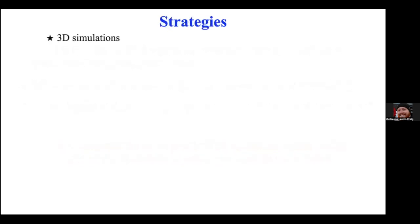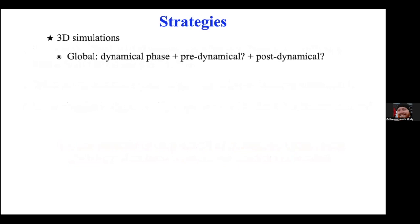Our strategy involves 3D global simulations of the dynamical phase. Ideally you would also simulate what happens before and leads into common envelope, but that's computationally very demanding because the orbital period is much larger at the beginning. So we cheat a little and start the companion right next to the primary star rather than at its actual initial separation.